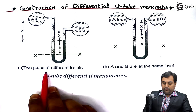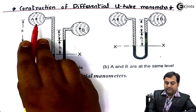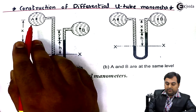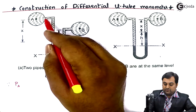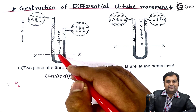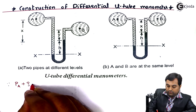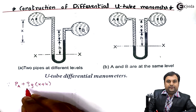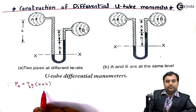For pipes at different levels, we calculate the pressure difference using equations for the left and right portions. For the left limb, we write: pressure in pipeline A is Pa, plus the pressure exerted by the fluid column of height x plus h, given by the hydrostatic law as ρa · g · (x + h), where ρa is the density of the fluid from pipeline A.